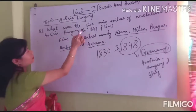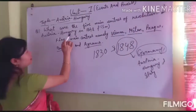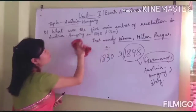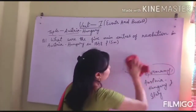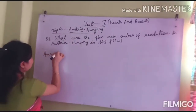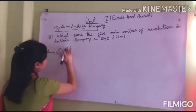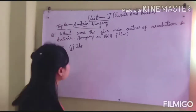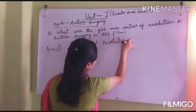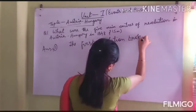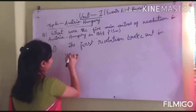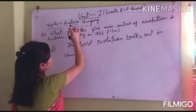What were the five main centers of revolution in Austria-Hungary in 1848? The first revolution broke out in Vienna. Vienna was the capital city of Austria-Hungary.